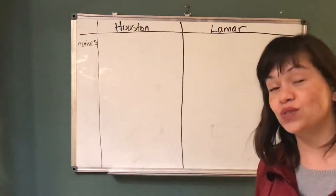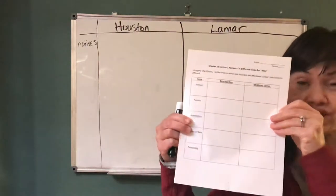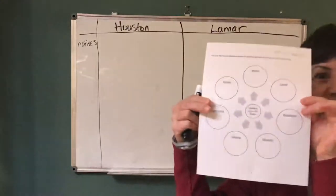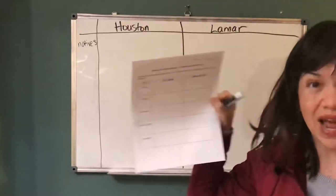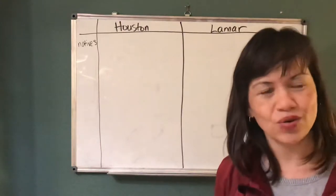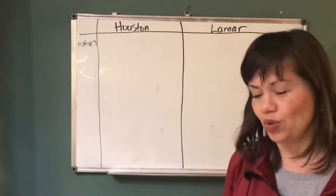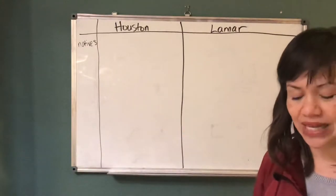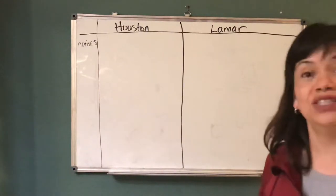Before you continue with this video, you should have the Chapter 11 Section 2 review in front of you — it's a graphic organizer on both sides, so there are two pages. You can do two separate pages or front and back, but you should have it printed out before watching. If you don't have a printer or run out of ink, you can recreate it on notebook paper. Have it in front of you while watching so you can copy it down.